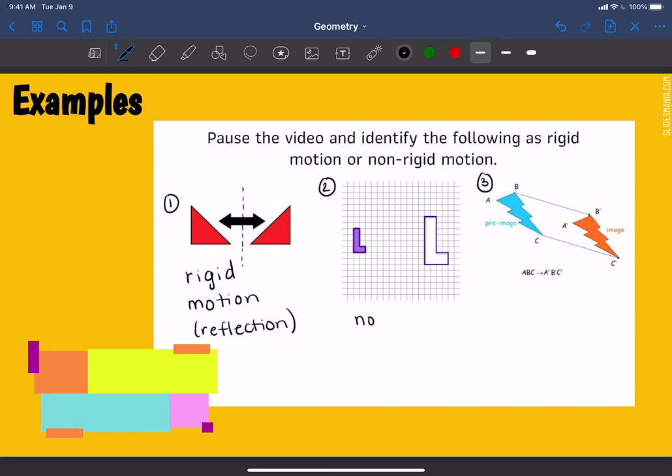The second example is a non-rigid motion. And the reason I know that is because the letter L over here is tiny and over here is a lot bigger. So I changed the size of the letter L. This is a non-rigid motion, which is specifically called the dilation, which I'll discuss in another video as well.